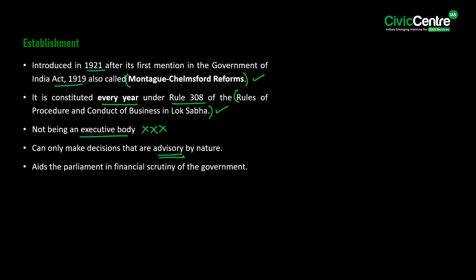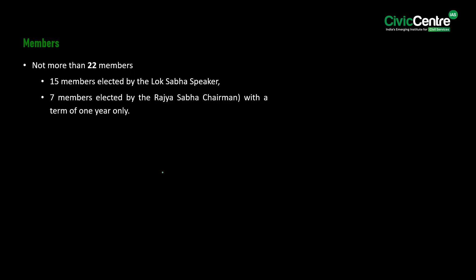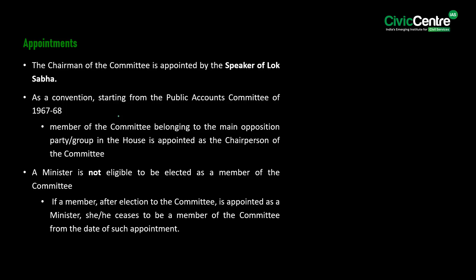The Public Accounts Committee aids the Parliament in financial scrutiny of the Government. It comprises not more than 22 members — 15 members are elected by the Lok Sabha Speaker and 7 members are elected by the Rajya Sabha Chairman, with a term of only one year. The Chairman of the Committee is appointed by the Speaker of the Lok Sabha. Conventionally, starting from the PAC of 1967–68, a member belonging to the main opposition party or group in the House is appointed as Chairman.